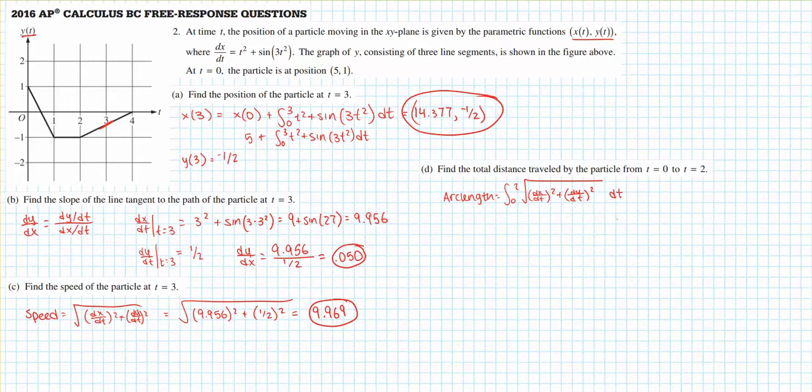One thing that might throw us off: if we look at the graph of y of t, we'll notice that from 0 to 1, dy dt is going to equal negative 2. But from 1 to 2, dy dt is actually just going to equal 0, which means we're going to have to divide this into two integrals. We're going to have to take the integral from 0 to 1 and add that to the integral from 1 to 2.